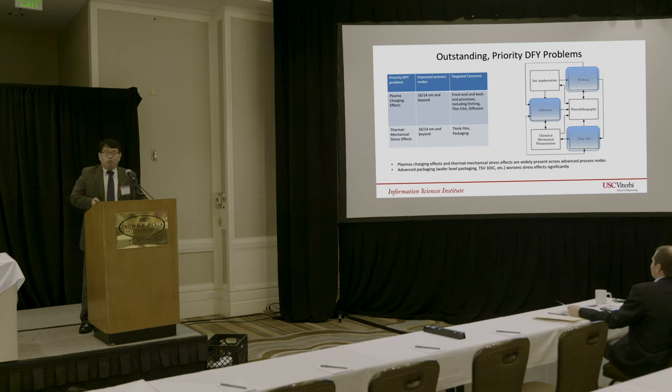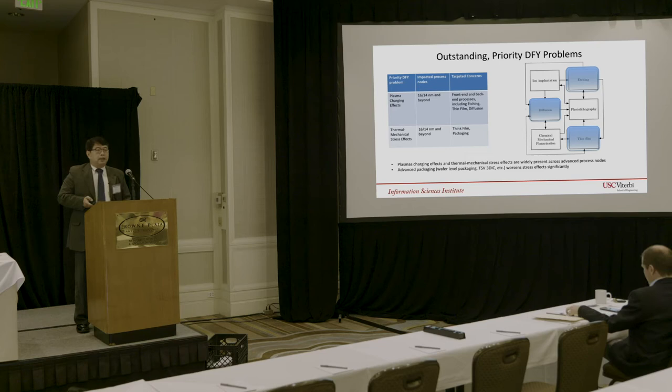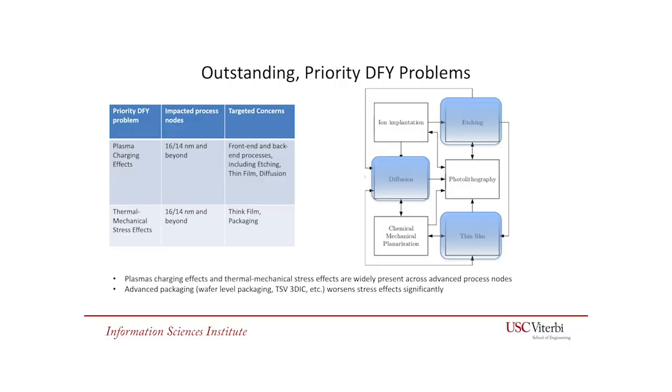We identified outstanding and priority DFY problems that have not yet been covered in either academia or industry in any significant way — essentially zero coverage today. On the left table, there are two priority DFY problems I want to address with MOSES: the first is plasma charging effects, and the second is thermomechanical stress effects. They cover basically all of the advanced process technology nodes — 16 nanometers and beyond.